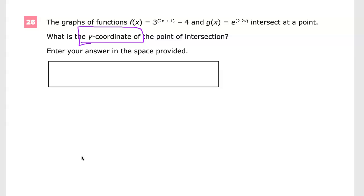The graphs of functions f(x) = 3^(2x+1) - 4 and g(x) = e^(2.2x) intersect at a point. What is the y-coordinate?